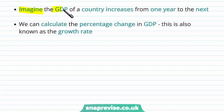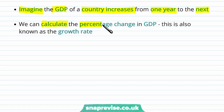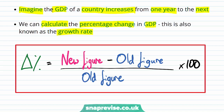If the GDP of a country increases from one year to the next, we can calculate the percentage change in GDP, which is also known as the growth rate. The percentage change equation is: new figure minus old figure, divided by the old figure, times by 100.